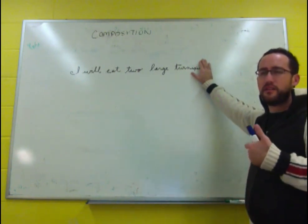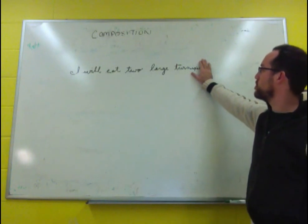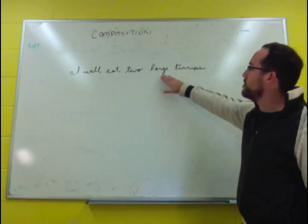We know what something needs to be to be a turnip. It needs to be a turnip, for one thing. Same for large and so forth.